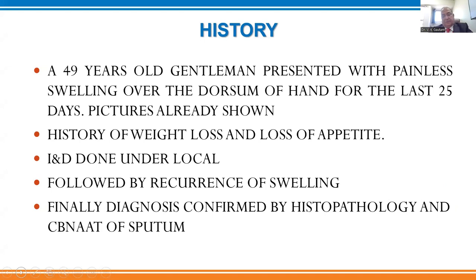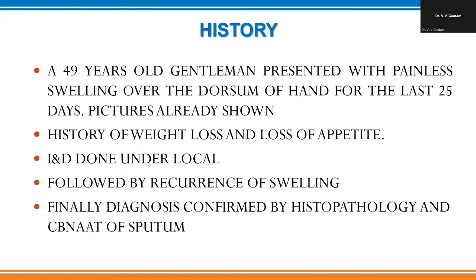Good afternoon. Musculoskeletal tuberculosis is a local manifestation of a generalized disease. You may not find a chest lesion, but often with detailed investigation, a chest, gastrointestinal, or other focus may be found. Of the musculoskeletal tuberculosis, TB of the spine — the so-called Pott's spine — is the commonest variety, followed by TB of major joints like the hip and knee, and then smaller joints. But tuberculosis of the soft tissue is a very uncommon entity.